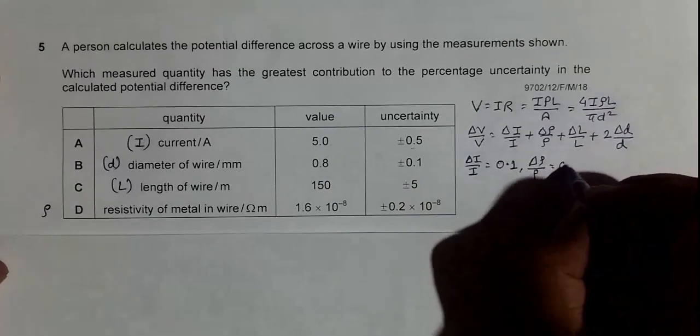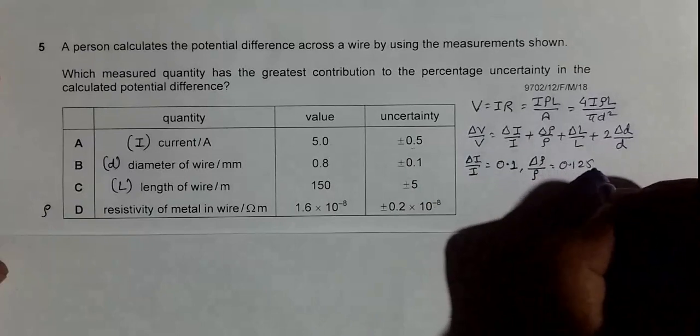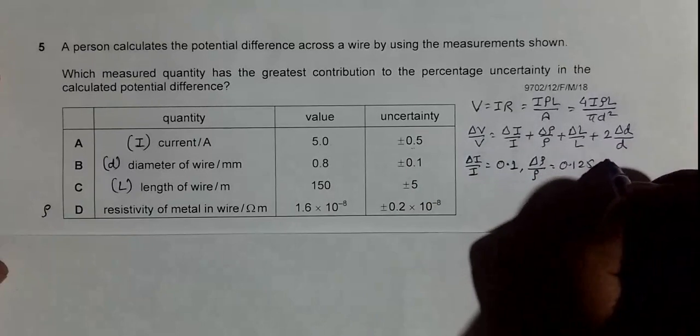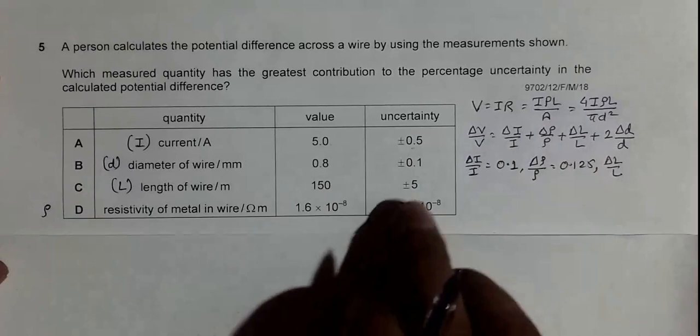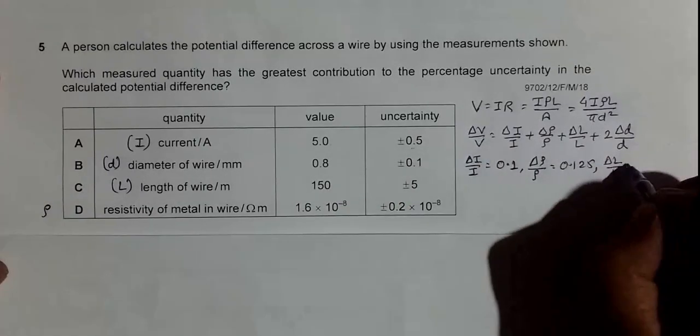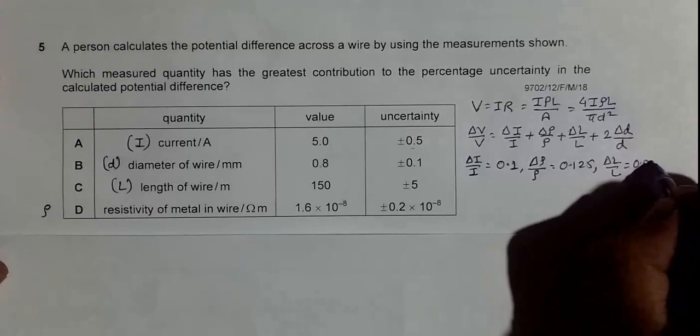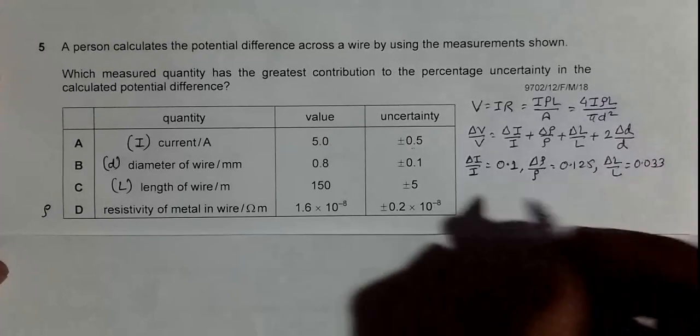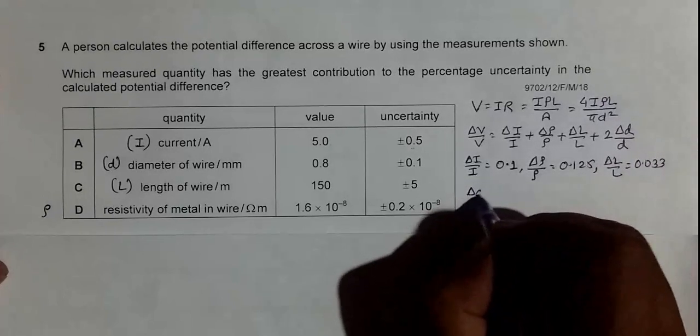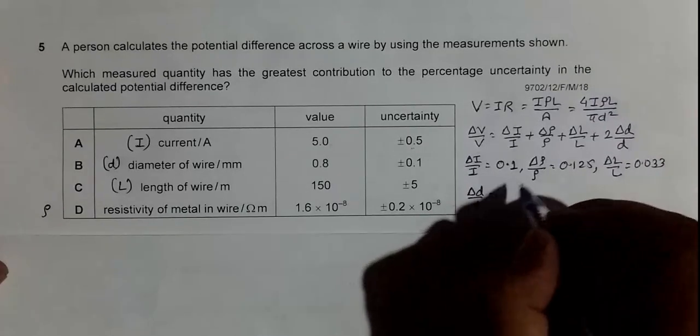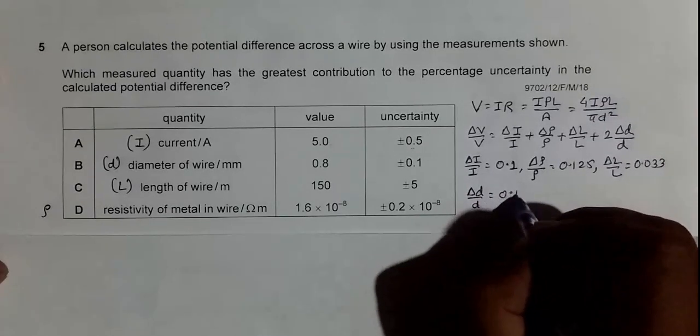If I do ΔL by L, it is 5 by 150, it is around 0.033. And if I do ΔD by D, it's again equal to 0.125.